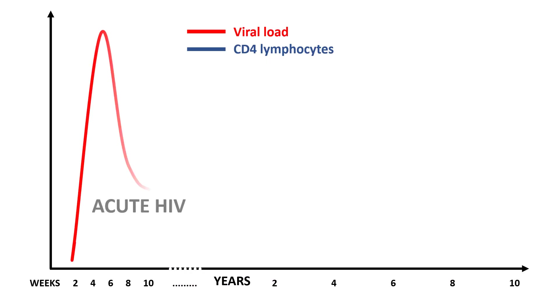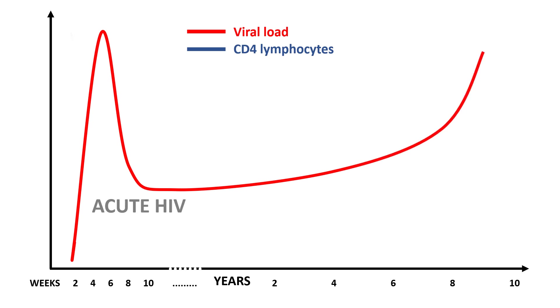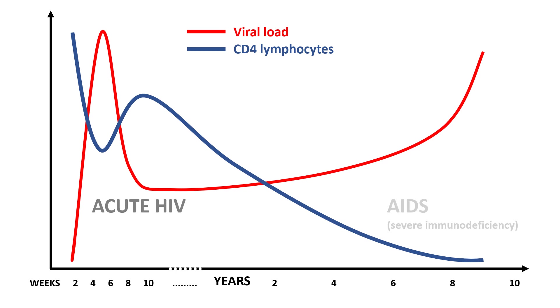All this time, the virus is gradually destroying the patient's immune system until it finally causes severe immunosuppression or AIDS. And at that point, treatment becomes much more difficult and less likely to succeed. Devastating opportunistic infections and life-threatening complications are basically unavoidable. And even if the patient survives, which is far from certain, chances are that their quality of life will never be the same.